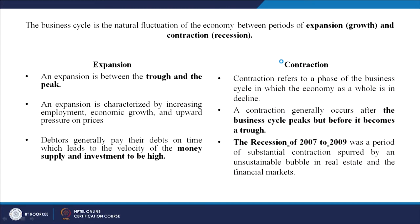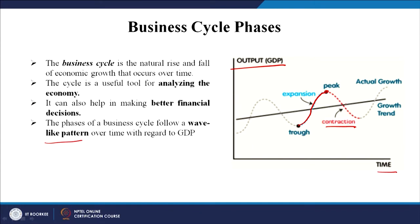The difference between expansion and contraction: the business cycle is the natural fluctuation of the economy between periods of expansion and contraction. An expansion is between the trough and the peak. Contraction refers to the phase in which the economy is in a decline. Expansion is characterized by increasing employment, economic growth, and upward pressure on prices. Contraction generally occurs after the business cycle peaks and before it reaches the trough.